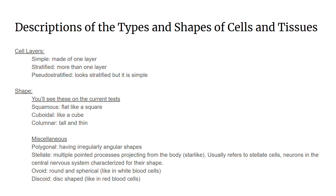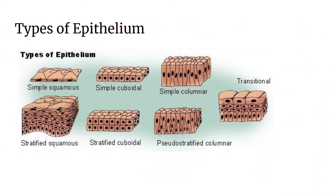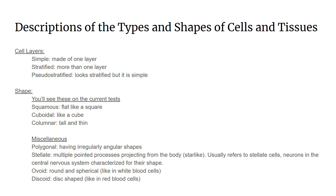Here is a description of the types and shapes of cells and tissues, which will also delve deeper into the types of epithelium. Here are the terms for describing cell layers: simple, which is made of one layer; stratified, which means more than one layer; and pseudostratified, which means it looks like it has more than one layer but actually just has one layer.